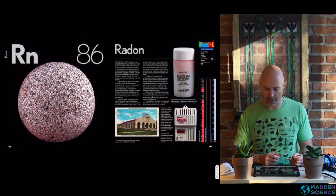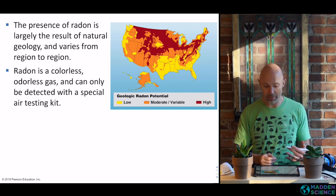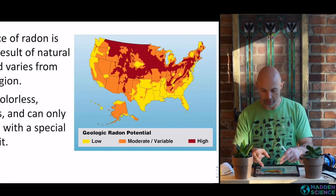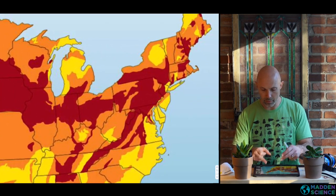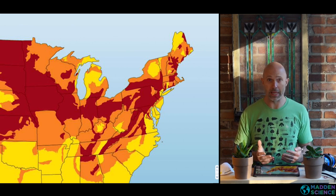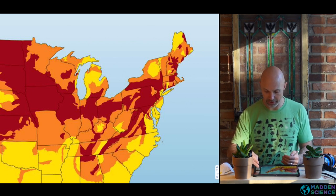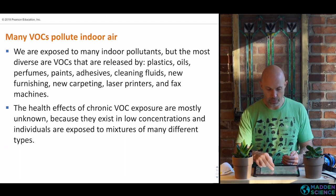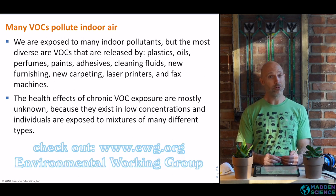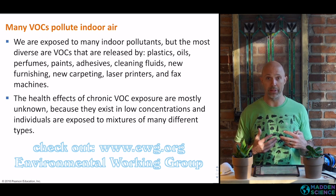Here's radon on the periodic table of elements. Here's a map showing the geologic potential for radon emissions — we are in a low region right now. Growing up in Northern New Jersey, we were in a high region, and nearly everybody had basements, so we had a radon detector in our basement. Volatile organic compounds indoors are things that come up anytime you're purchasing new items — try to decrease the amount of these chemicals in your home.